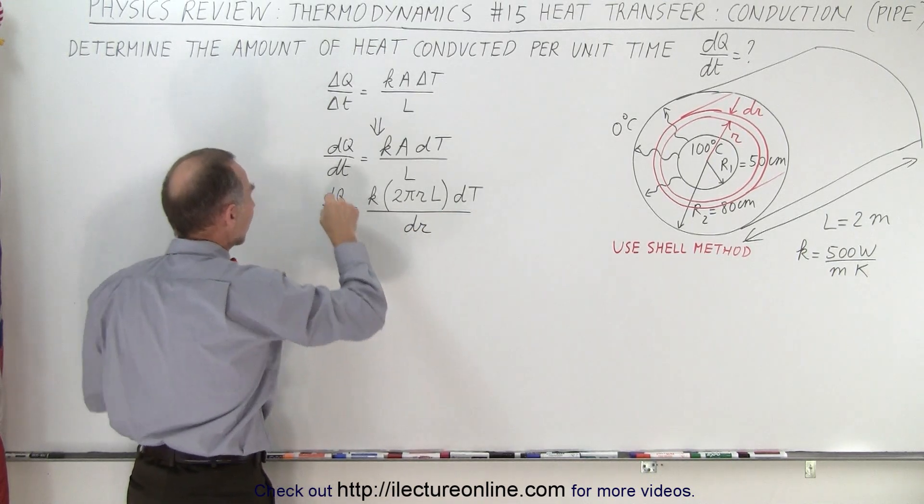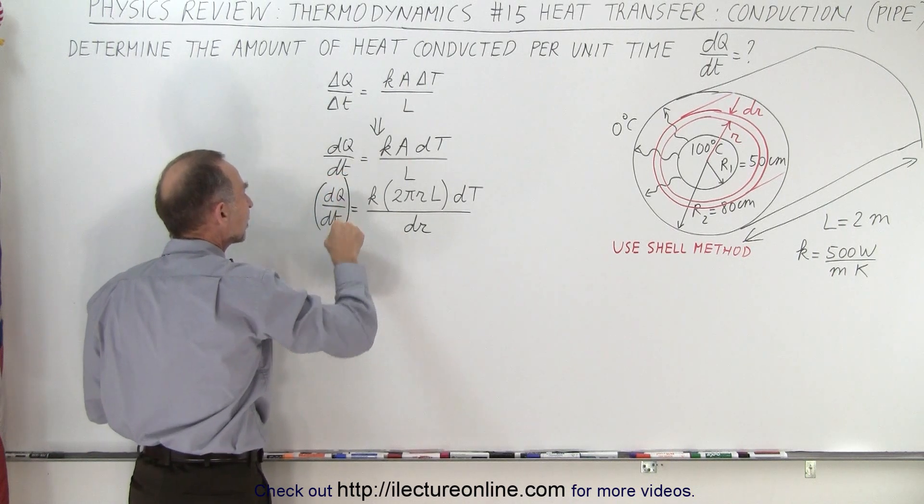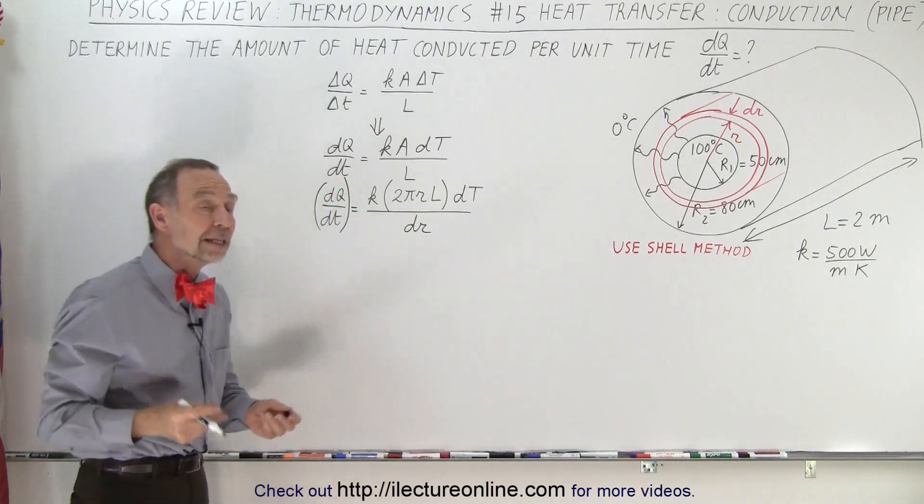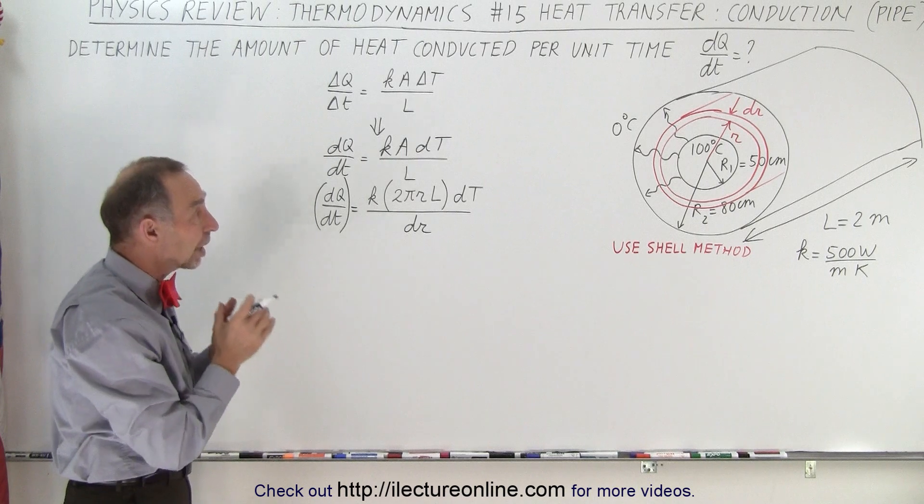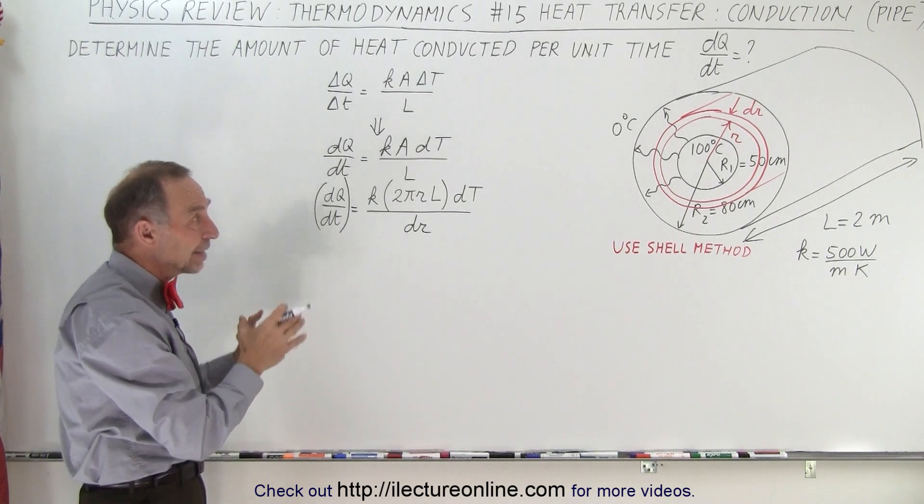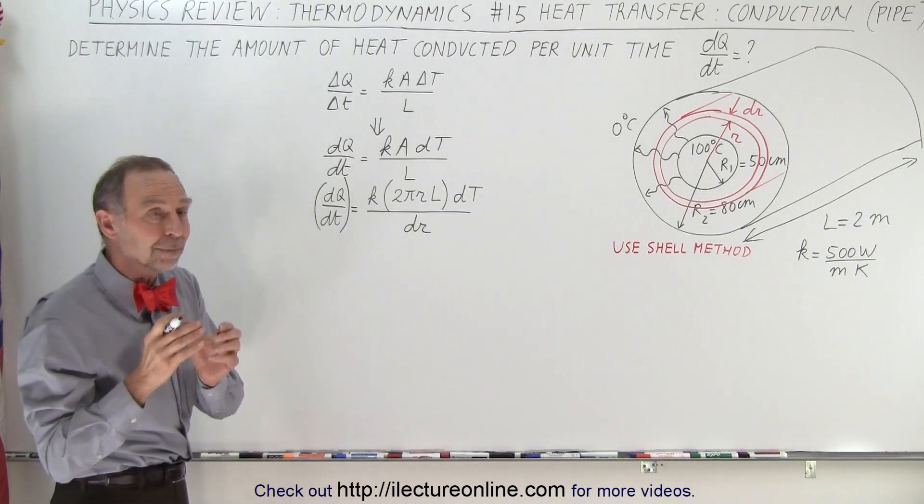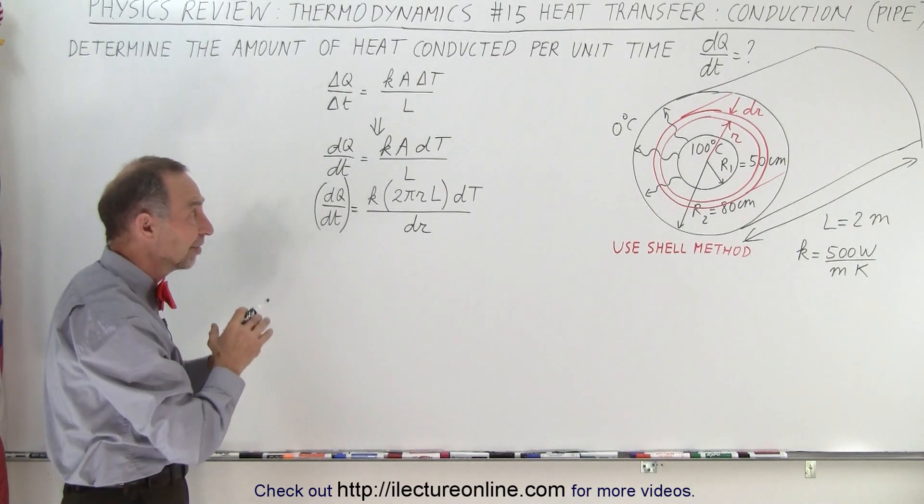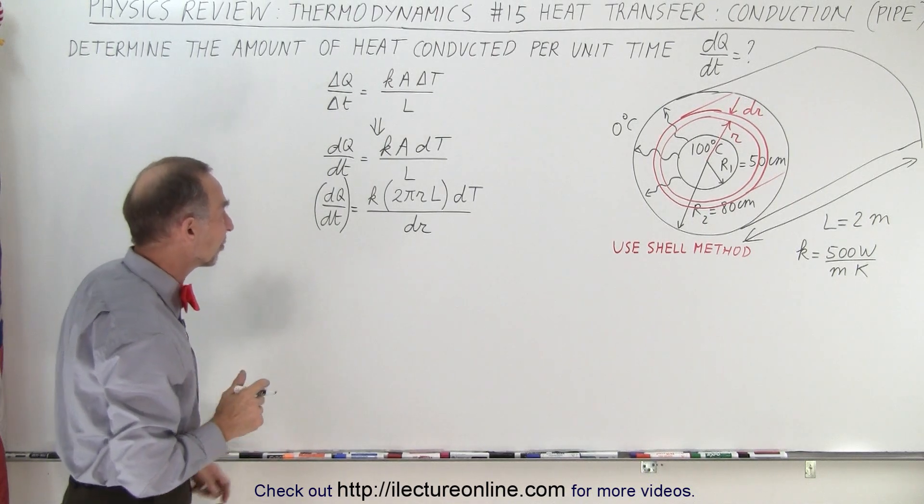The key to solving a problem like this is realizing that dQ/dt is going to be a constant, because we keep the inner and outer temperatures at the same level—100 and 0. Since that doesn't change, dQ/dt becomes a constant, and then we can rewrite the equation.